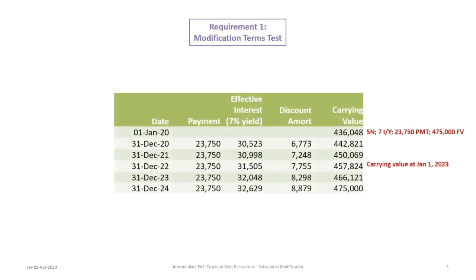The carrying value of this note at January 1st, 2020, when the note was taken on, was determined to be $436,048. This is based on a five-year note at 7% interest with $23,750 in payments and a future value of $475,000. The modification is made on January 1st, 2023 — the same as December 31st, 2022 — and with two payments remaining, the present value is $457,824. This is exactly the same as determined in the previous Tutorial 6B.